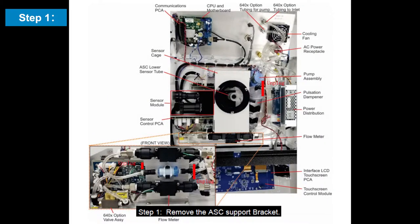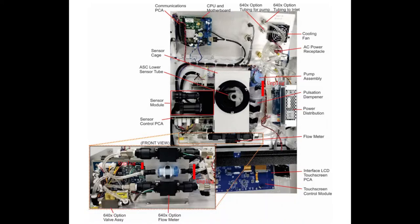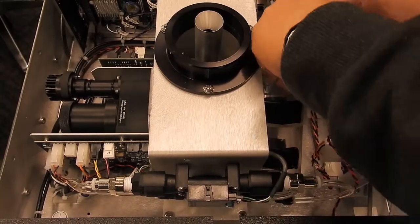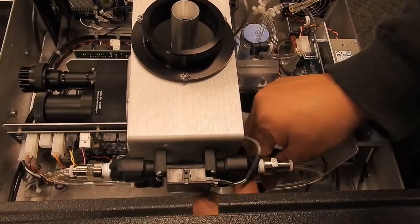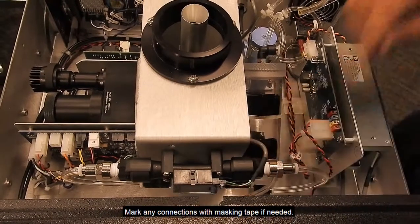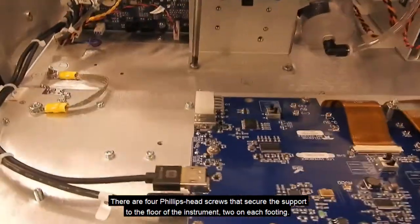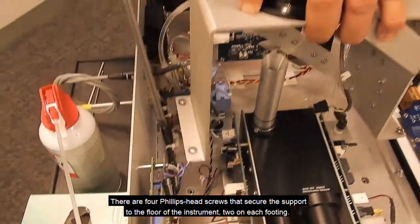Step 1: Remove the ASC support bracket. Make note of all electrical and plumbing connections that go between the components on the ASC support and the rest of the instrument. Unplug the flow sensors from the front control board. Unplug the pneumatic connections on the bracket. Mark any connections with masking tape if needed. There are four Phillips head screws that secure the support to the floor of the instrument, two on each footing.